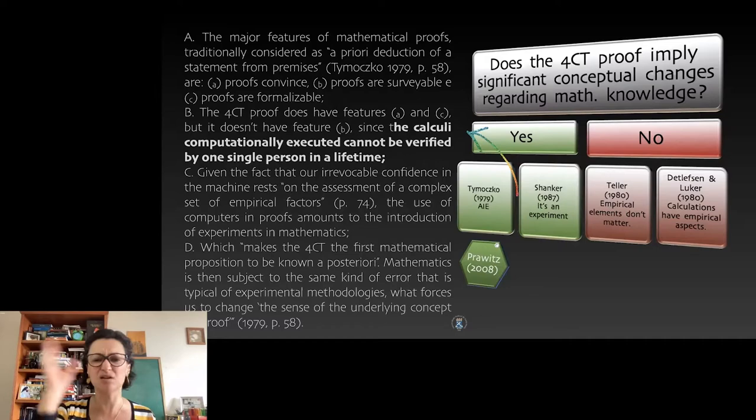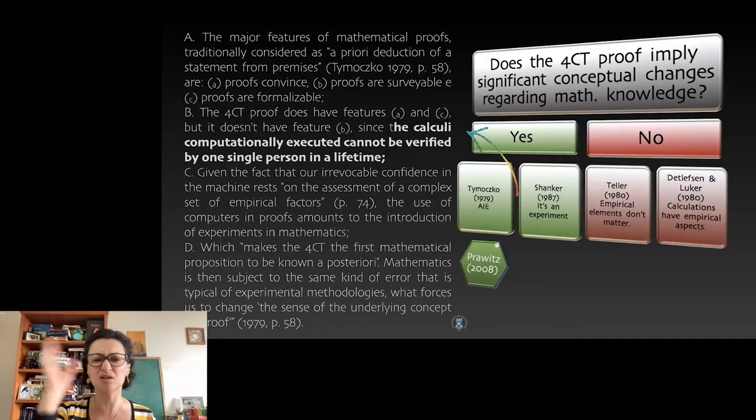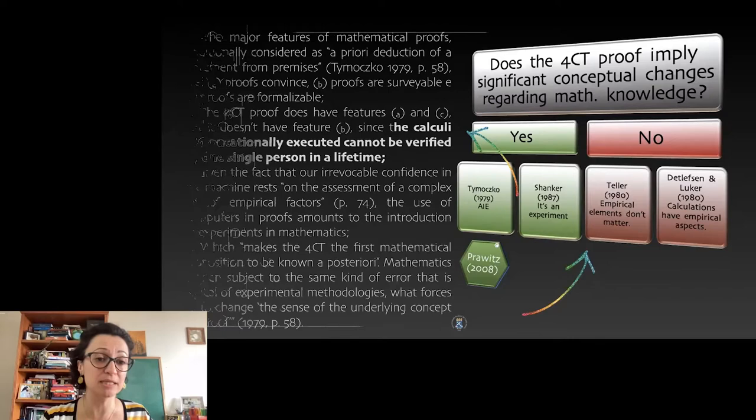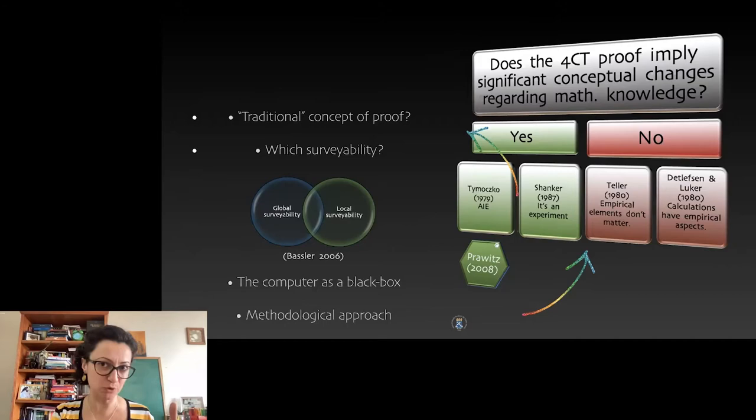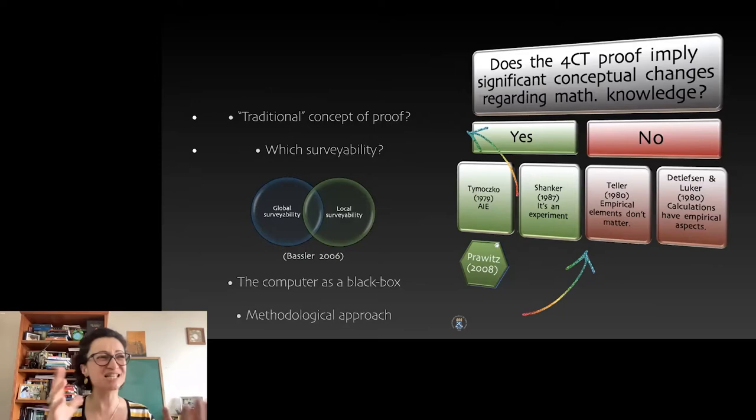Now the seminal argument—here's Shanker, Stuart Shanker, saying in the name of Wittgenstein that it's not even a proof, it's just an experiment. Okay, but the seminal argument by Tymoczko has, as I said, many problems. To begin with, he doesn't clarify or he doesn't give enough evidence for this characterization of proof. Where does it come from that proof is convincible and surveyable and formalizable? Also, and this is the second point, it's very important for all the debate that followed: he associates the non-surveyability of the proof with the use of computers, saying that using computers we have experimental elements coming into the proof, but it's not clear how the experimental character has to do with the non-surveyability.